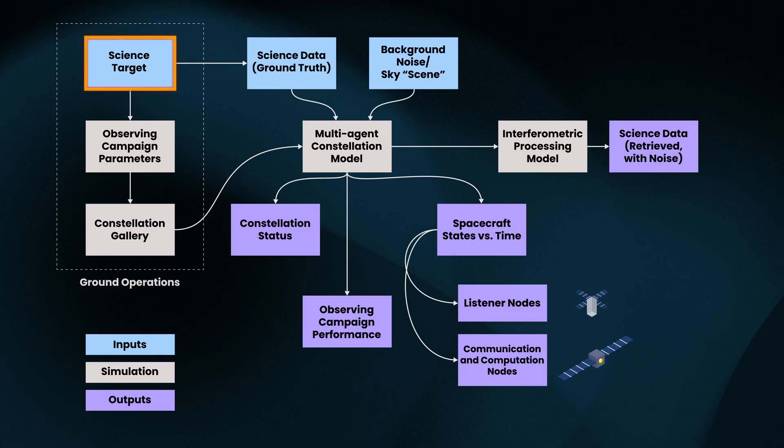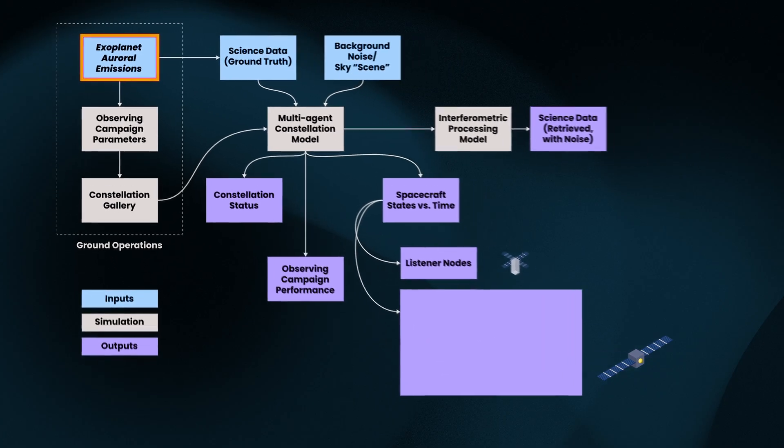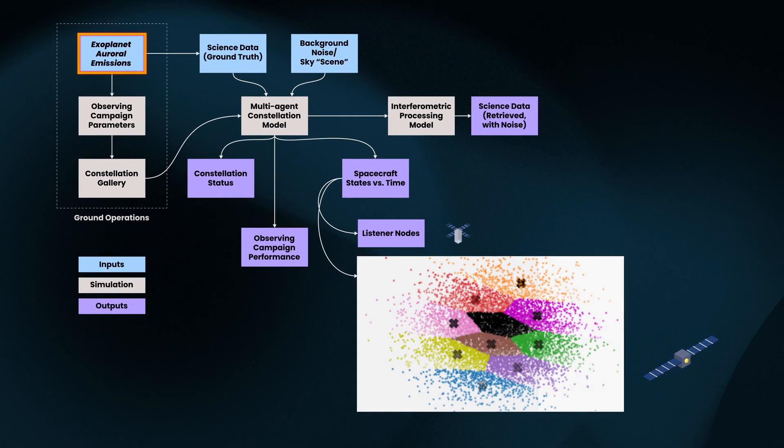Once a science target is selected, for example, a survey of exoplanet auroral emissions, then the necessary constellation geometry is derived and communicated to the GOLO CCNs. The CCNs then instruct their corresponding listener nodes to efficiently move into the required geometry, and a simulated observing campaign begins.